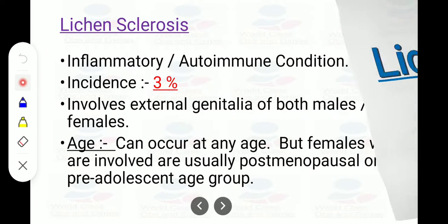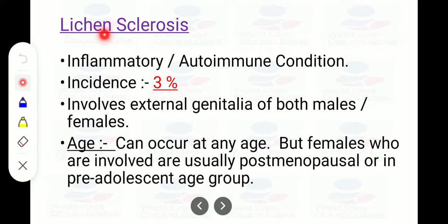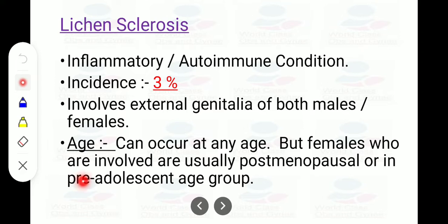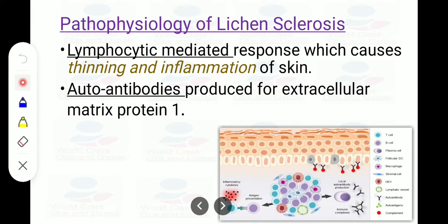Lichen sclerosis is an inflammatory autoimmune condition. There are certain antibodies produced and a lymphocytic mediator response. Its incidence is 3% — an important figure. It involves the external genitalia of both males and females. It can occur at any age, but females involved are usually postmenopausal or may belong to the pre-adolescent age group.